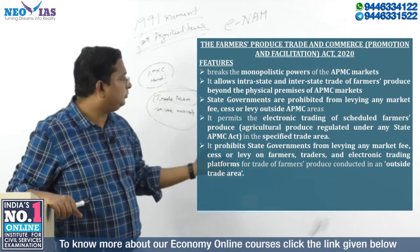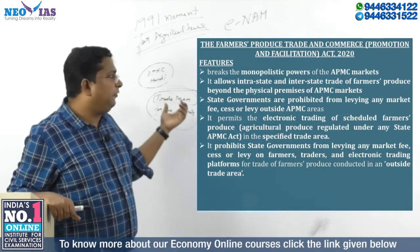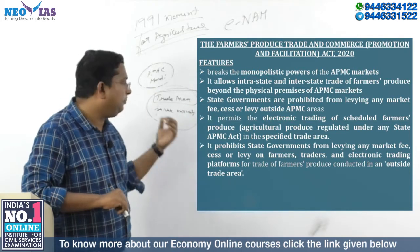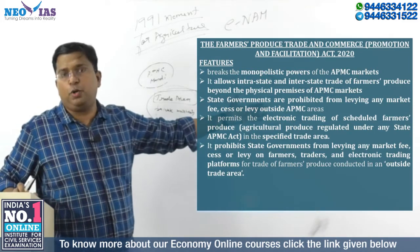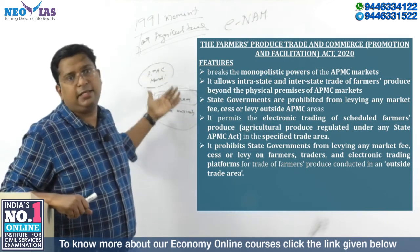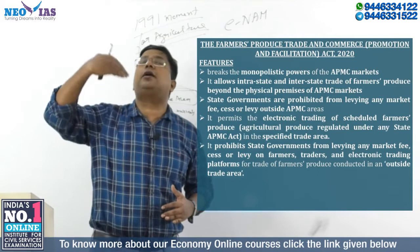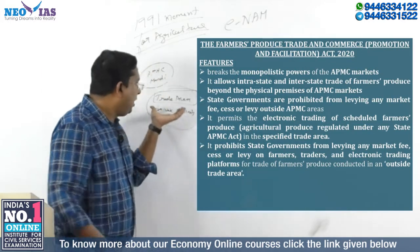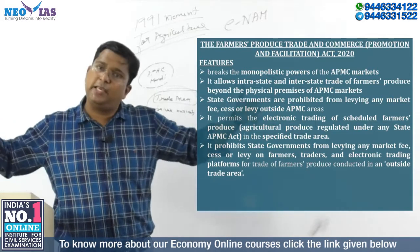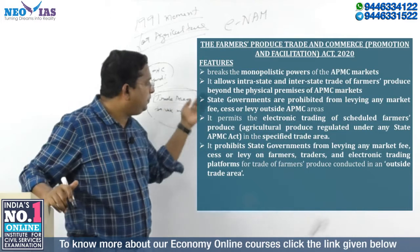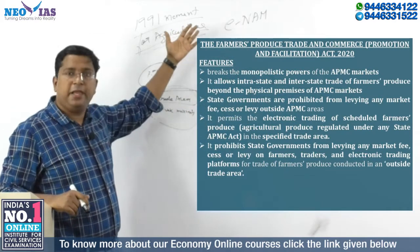This law permits electronic trading of scheduled farmers' produce — nothing but the farmers' produce which is currently regulated by state APMC laws. In this specified trade area, electronic trading for all agricultural produce, including produce which has been traded in the APMC mandi, is allowed. This is another feature of the law — it allows electronic trading in the private markets of this trade area. It is up to the private sector to create as many trade areas as possible in a state. Don't confuse this with eNAM; in the future, these platforms may be integrated.